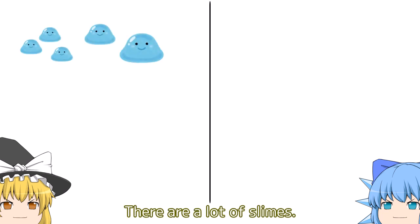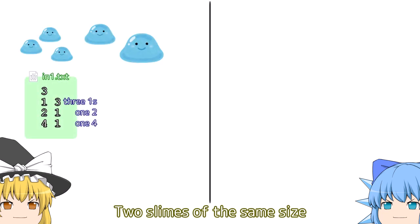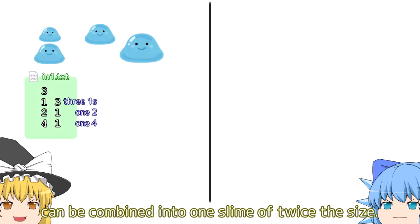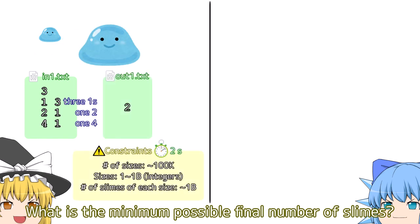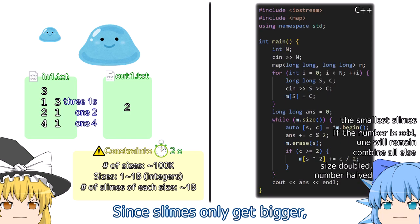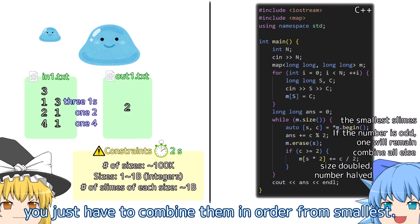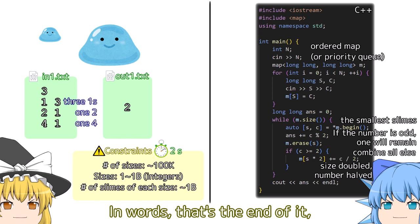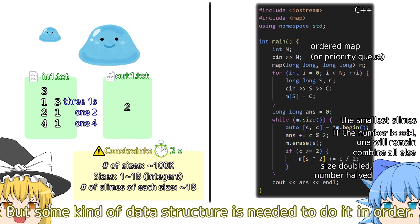Problem D. There are a lot of slimes. Two slimes of the same size can be combined into one slime of twice the size. What is the minimum possible final number of slimes? Since slimes only get bigger, you just have to combine them in order from smallest. In words, that's the end of it, but some kind of data structure is needed to do it in order.